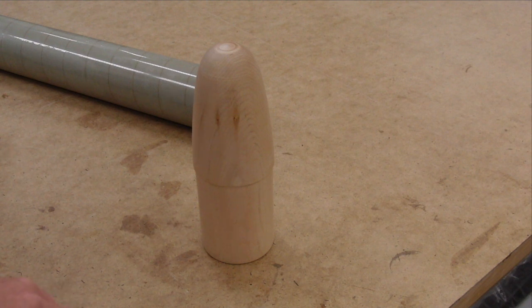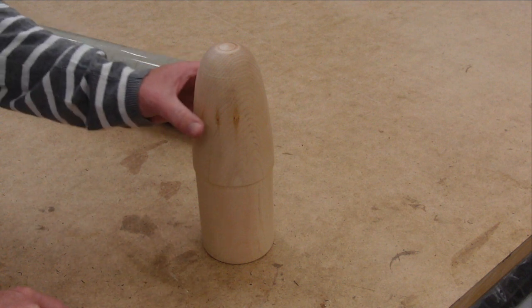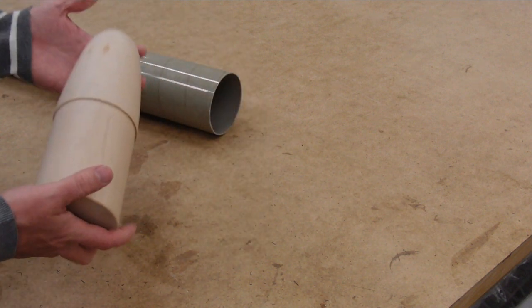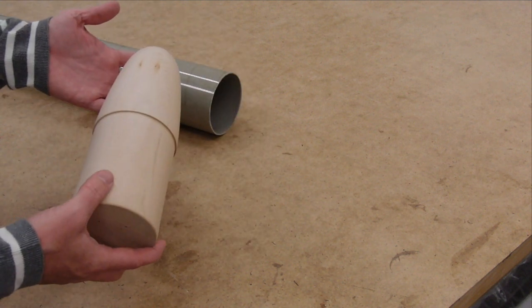The first thing we need to do is obtain our mold plug. This is a turning made out of wood or some similar inexpensive material that is the same shape as the nose cone we want to produce.